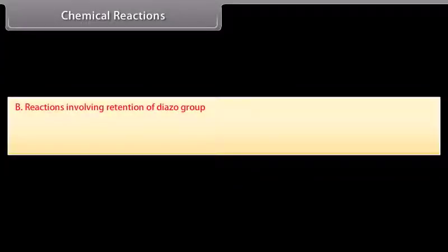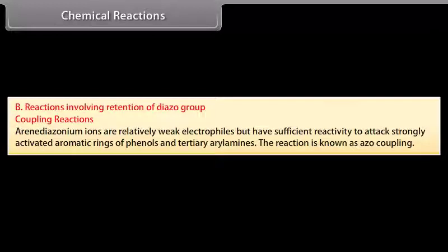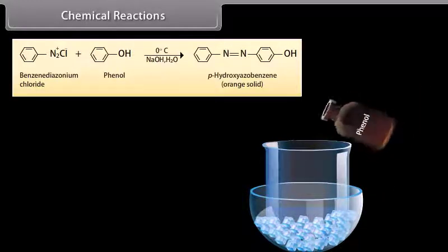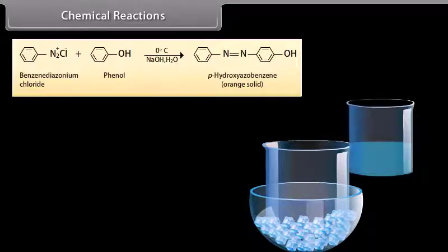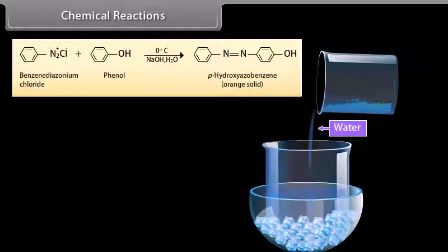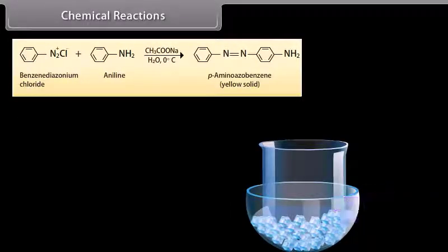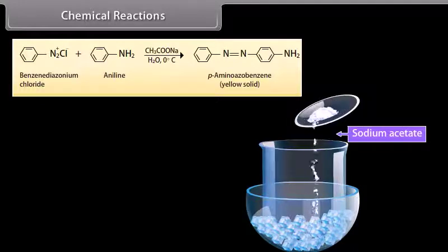Reactions involving retention of the diazo group — Coupling reactions: Arene diazonium ions are relatively weak electrophiles but have sufficient reactivity to attack strongly activated aromatic rings of phenols and tertiary arylamines. This reaction is known as azo coupling. Benzene diazonium chloride reacts with phenol in the presence of NaOH at 0°C to produce para-hydroxyazobenzene. Benzene diazonium chloride reacts with aniline in the presence of sodium acetate at 0°C to produce para-aminoazobenzene.